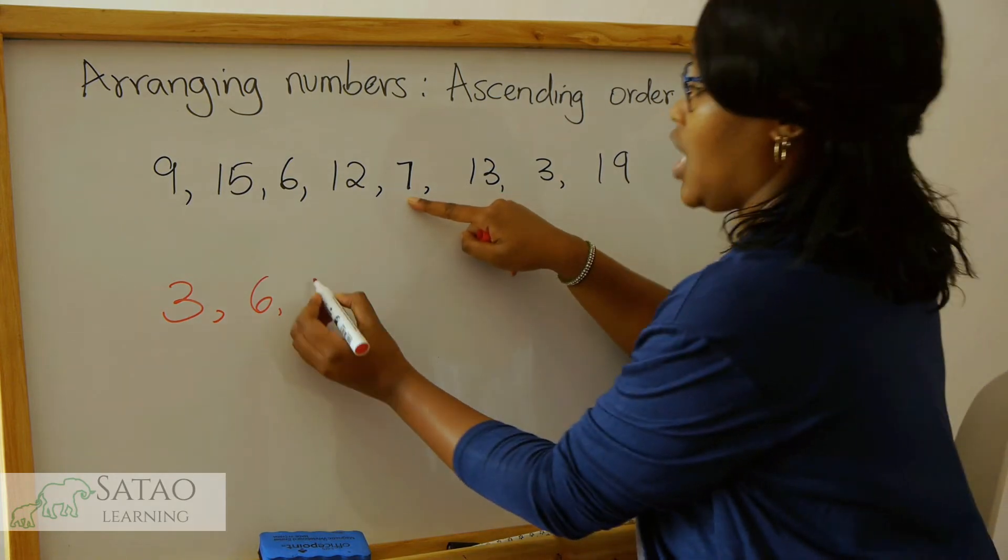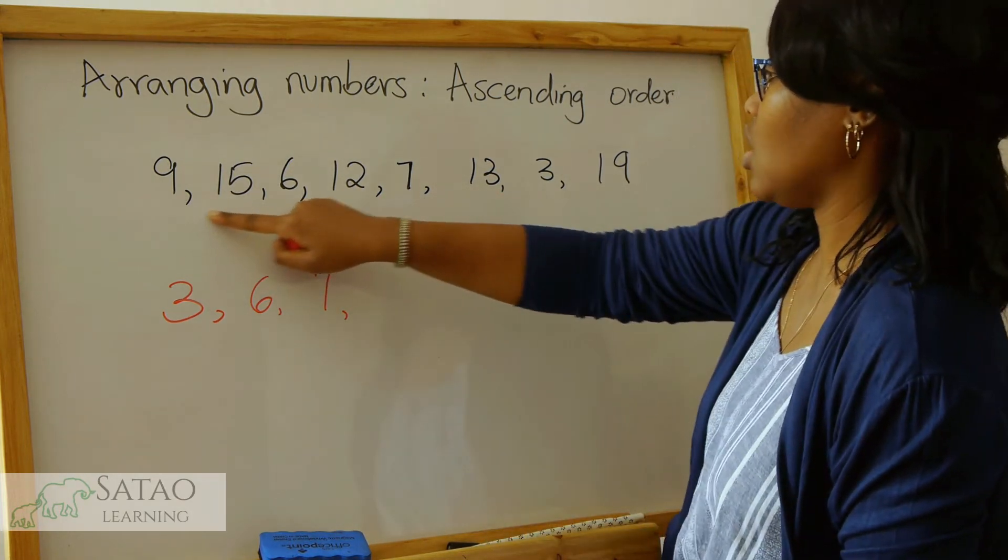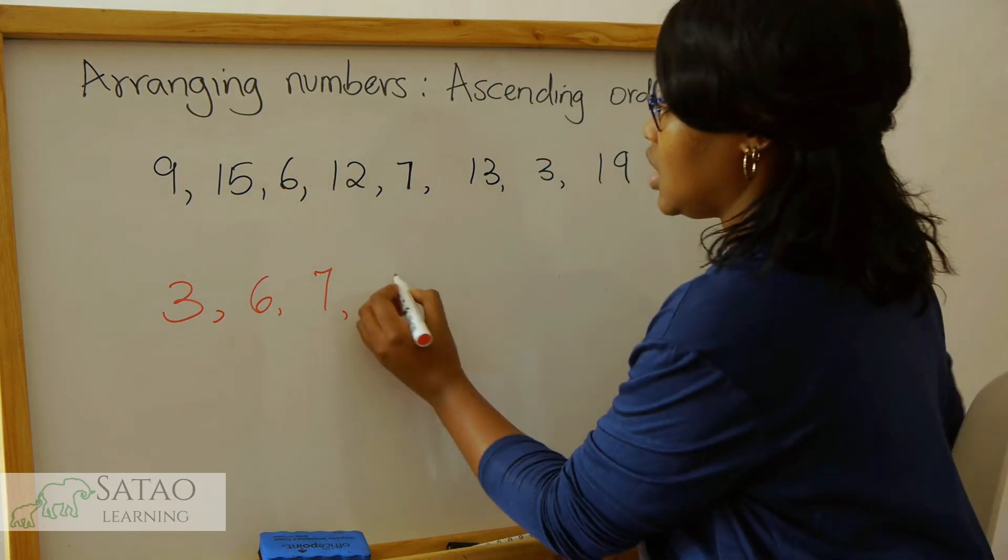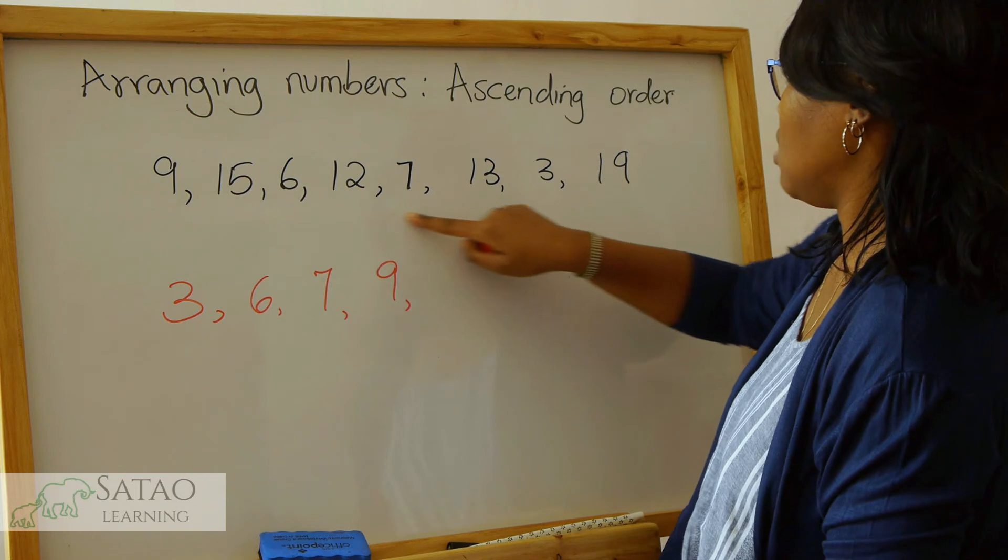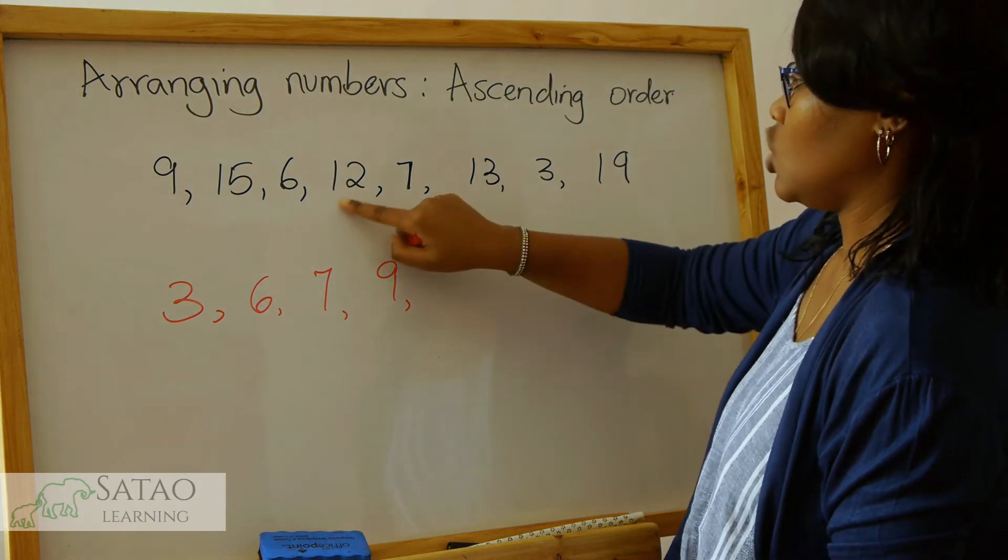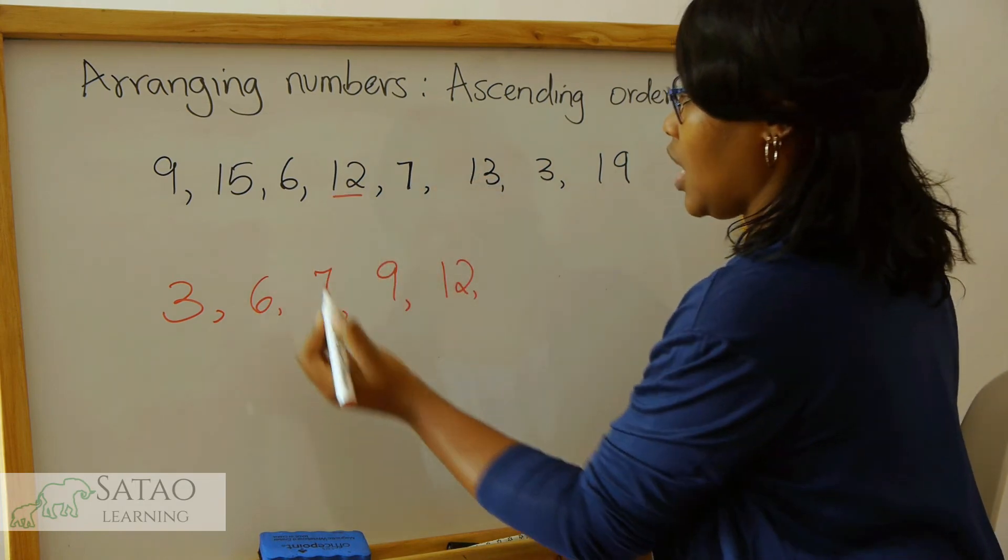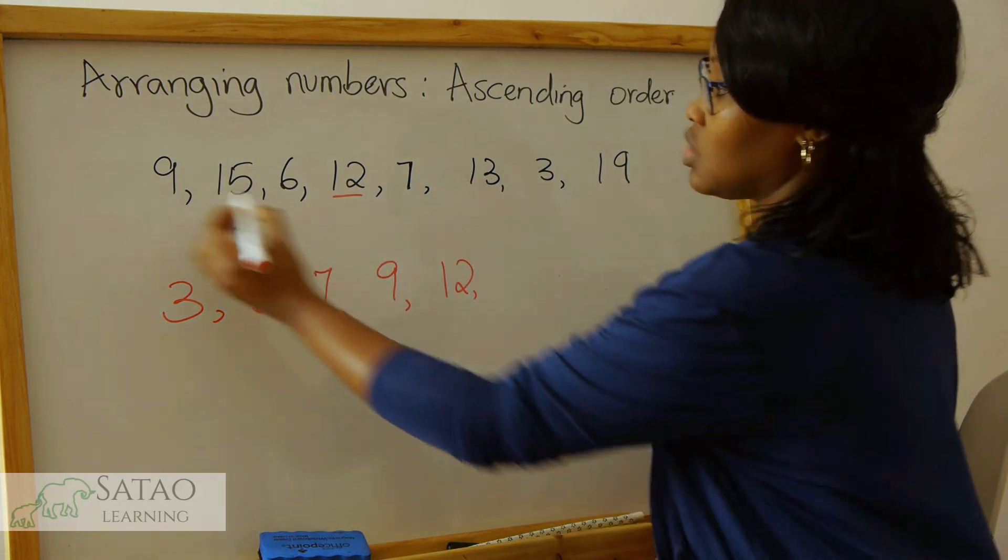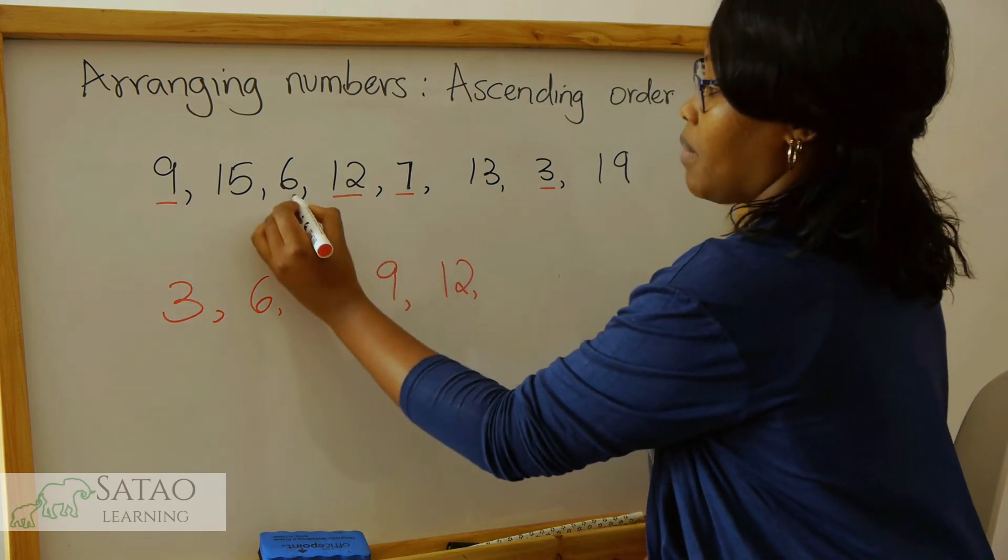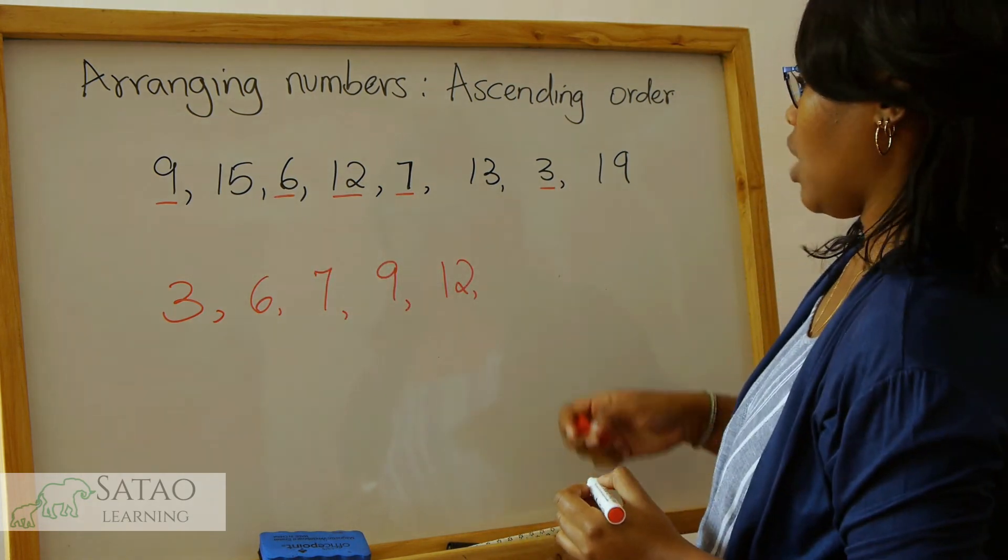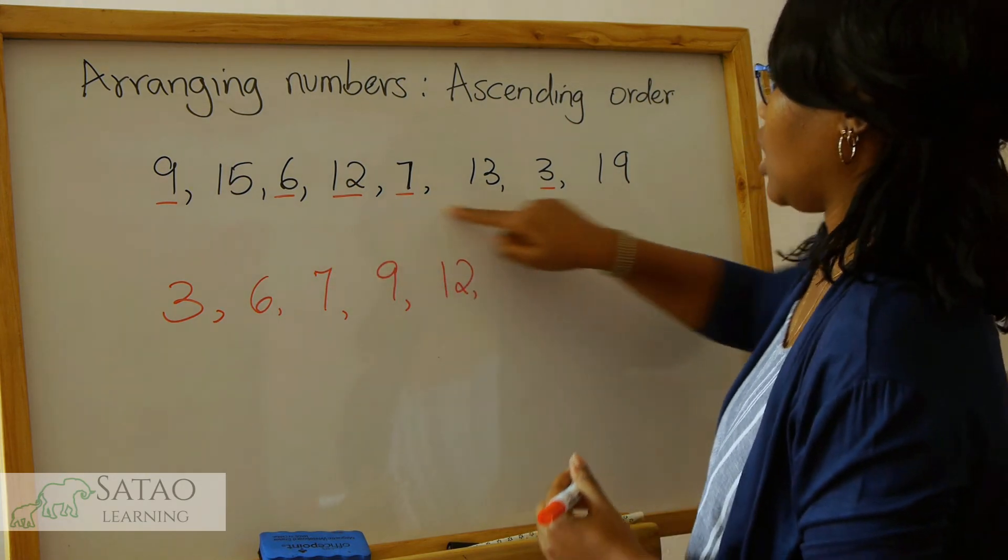Next, 7 is here. Next, 8 is not there but 9 is here. 10 is not here, 11, 12. So you have to keep looking at your numbers, and if you can, it's good to mark them so that you can remember which numbers you have already written down.